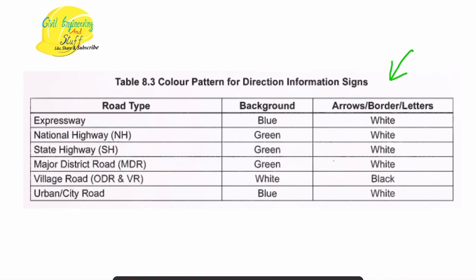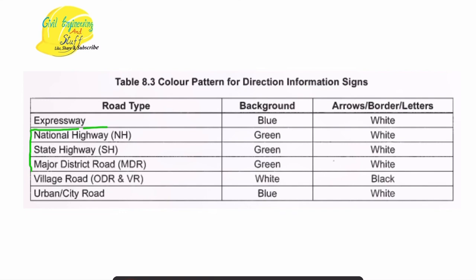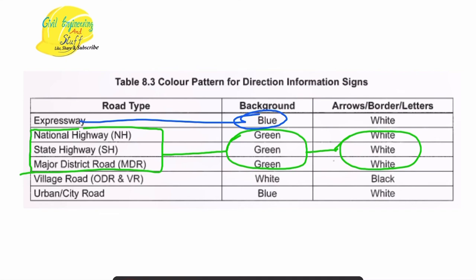If the informatory sign is installed on an expressway, the background will be blue with white arrows, borders, and lettering. For national highways, state highways, and major district roads, the background will be green with white markings. For urban cities, the background is also blue with white markings. For village roads, the background will be white with black markings — black markings are only used for village roads.